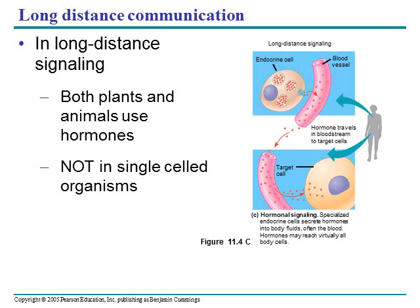For long-distance signaling, both plants and animals use hormones. There's no need for long-distance signaling in single-celled organisms, because they only need to communicate within their own cell. For multicellular organisms, an endocrine cell secretes a hormone that enters the bloodstream, travels through the body, and is received at its target cell.